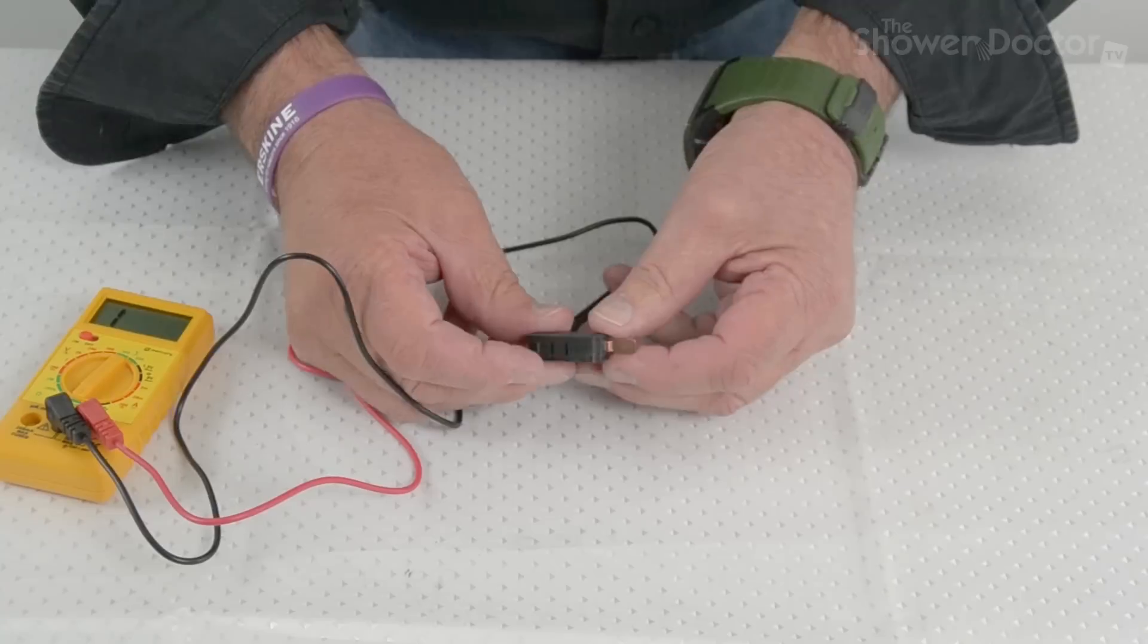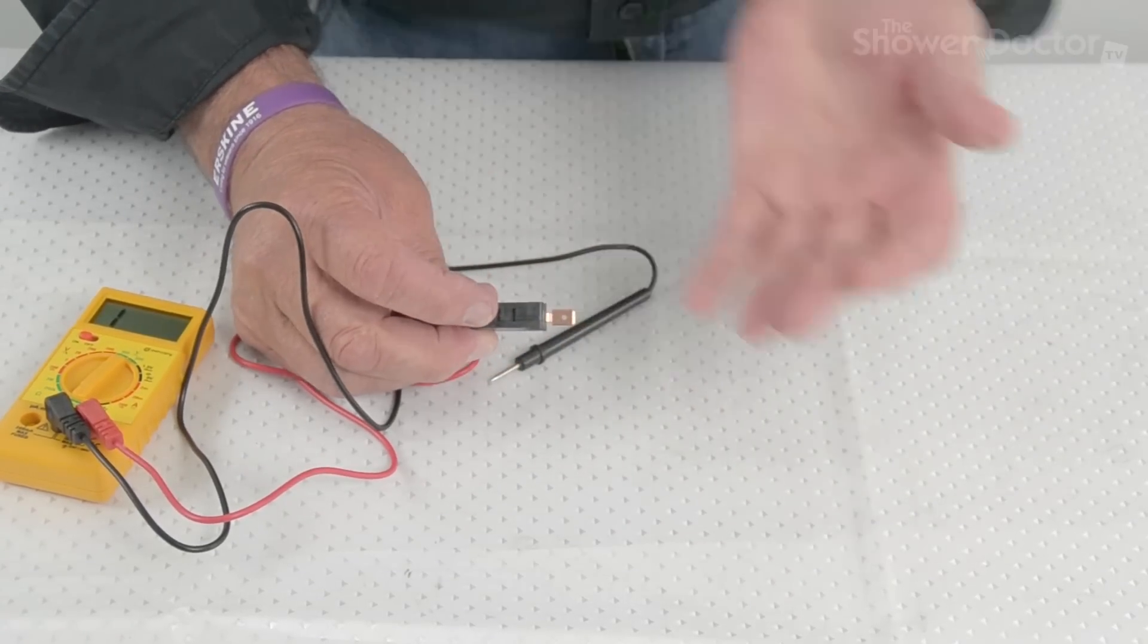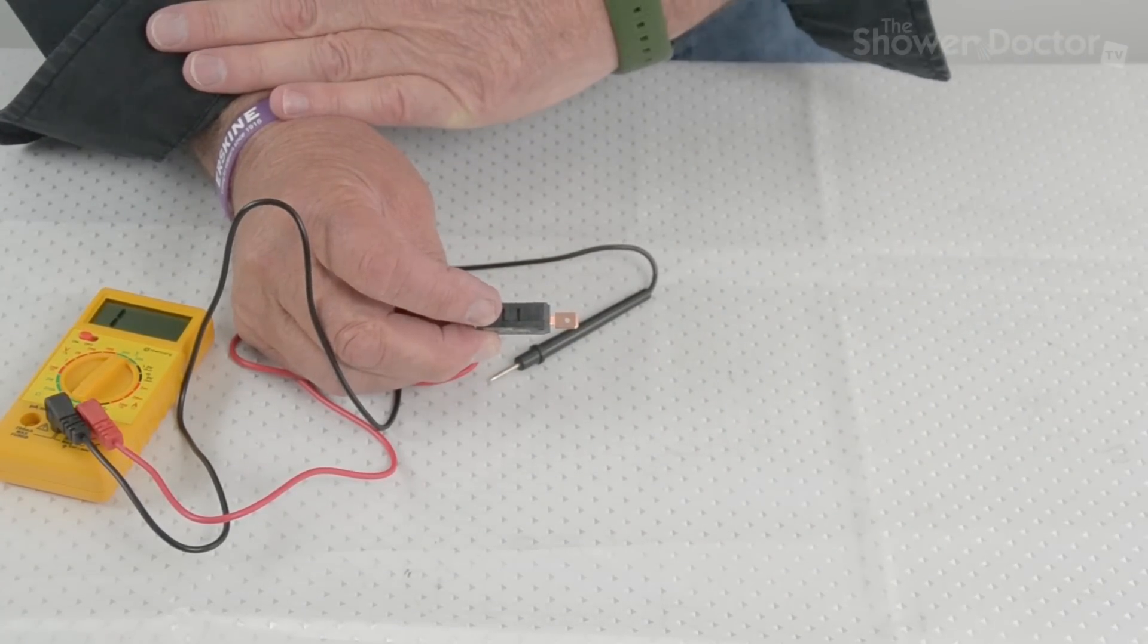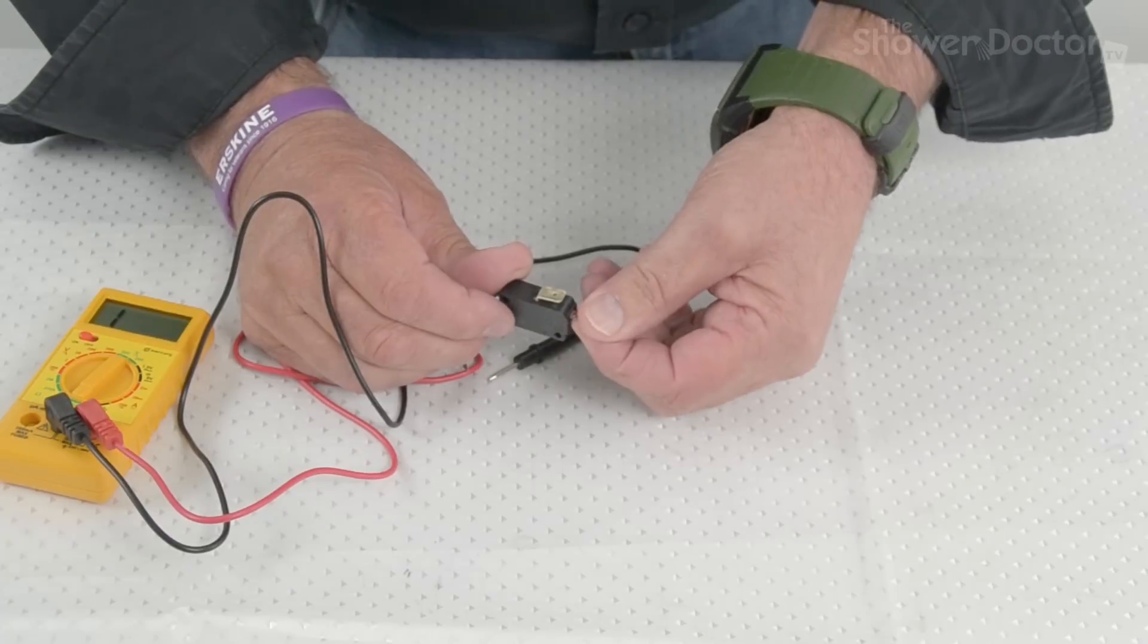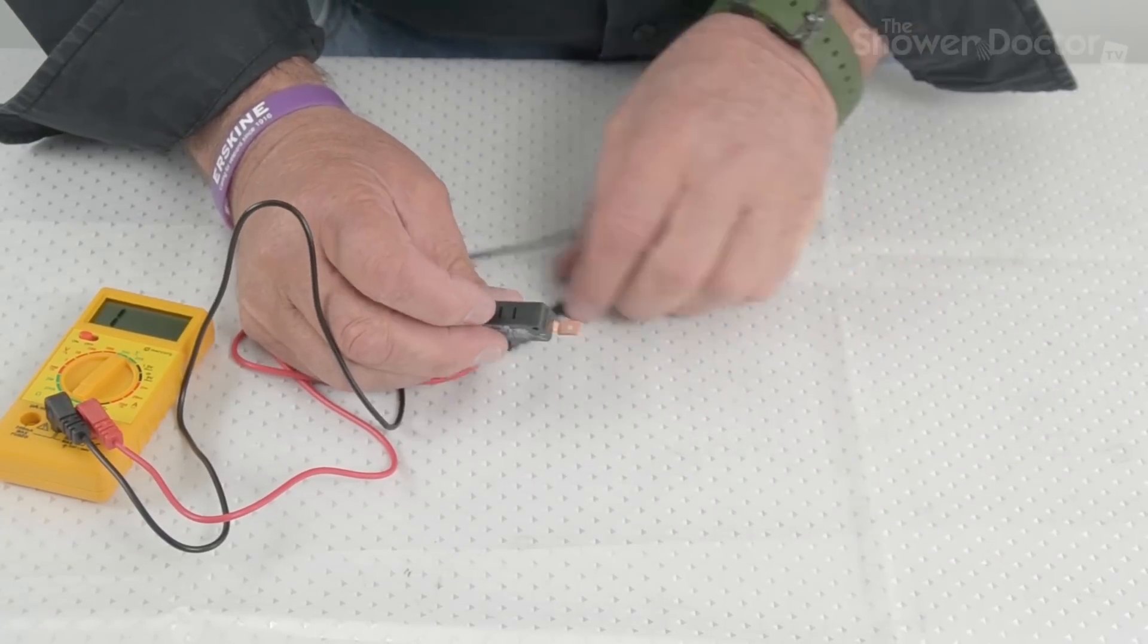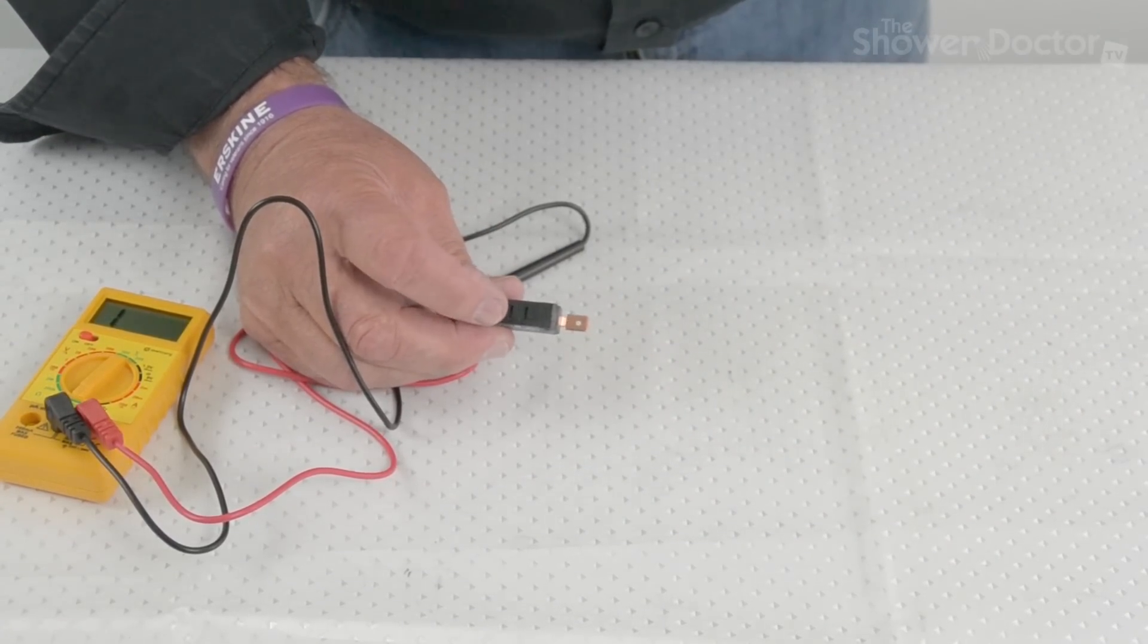And basically if this is faulty, if this switch was faulty, when the button is pressed in, there will be once again no noise, no continuity. So this is a good switch. And that's the continuity checks that you can do with a shower.